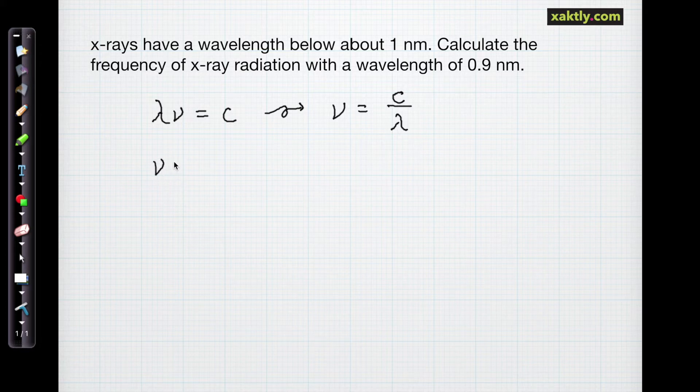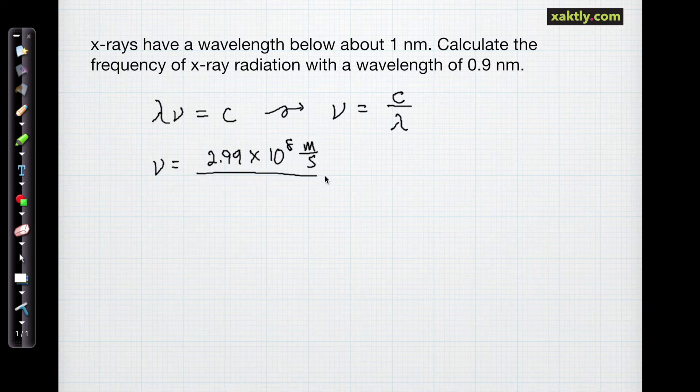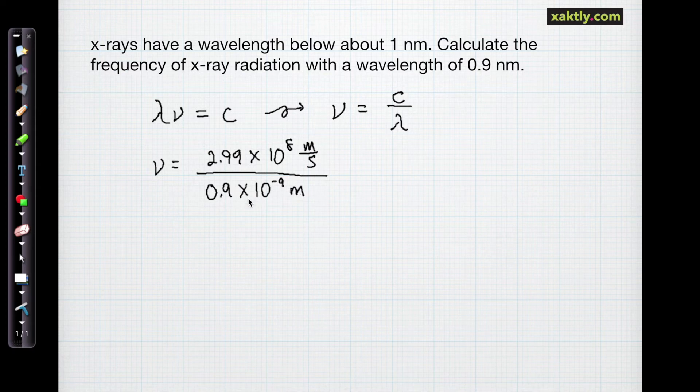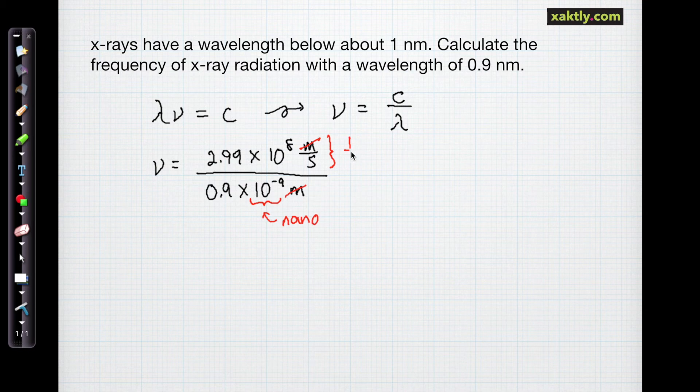C is 2.99 times 10 to the eighth meters per second. And the wavelength here is going to be 0.9 times 10 to the minus ninth meters because nano means times 10 to the minus ninth or a billionth. And canceling the units gives us a unit of 1 over seconds which is hertz.